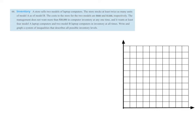This is 7.5 number 66. A store sells two models of laptop computers. The store stocks at least twice as many units of Model A as of Model B. The cost to the store for the two models are $800 and $1,200 respectively. The management does not want more than $20,000 in computer inventory at any one time, and it wants at least four Model A laptop computers and two Model B laptop computers in inventory at all times. Write and graph a system of inequalities that describes all possible inventory levels.